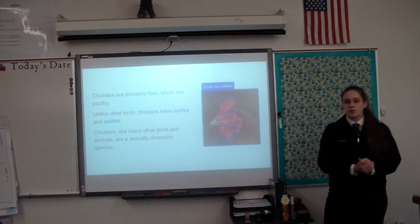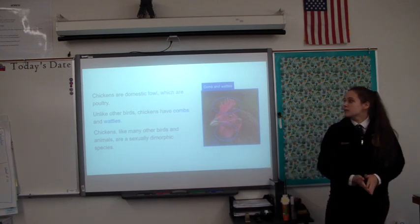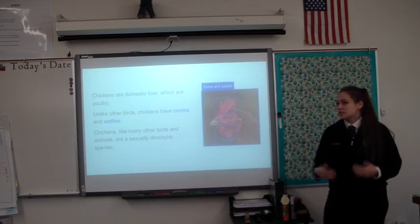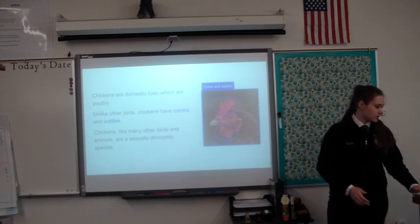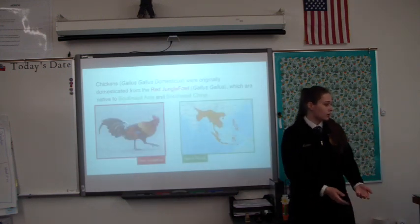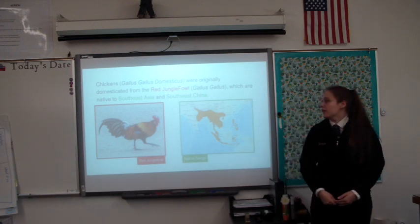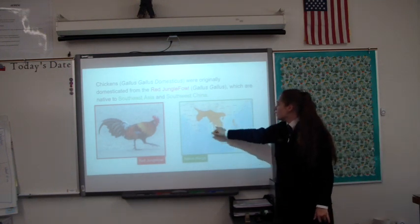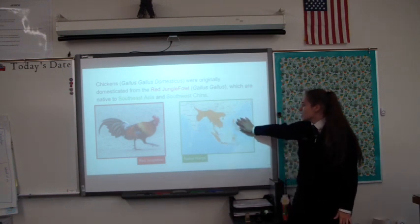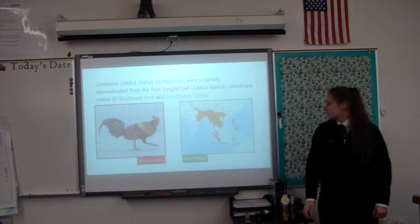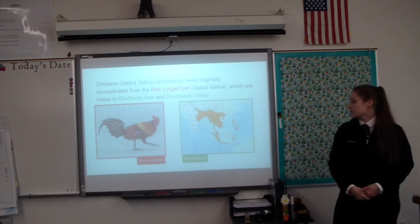Chickens are also sexually dimorphic, which is very obvious in birds and a lot of other species. Chickens were originally domesticated from the red jungle fowl, located in Southeast Asia and Southwest China. All the orange on this map shows where they're located — that's their native range. You can still actually own the jungle fowl today; they're still alive.